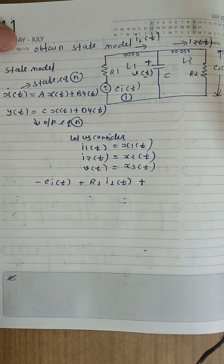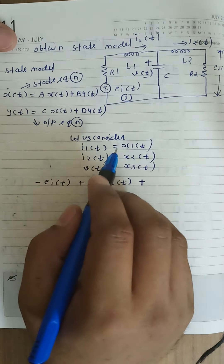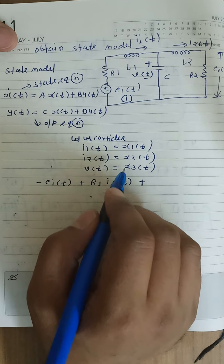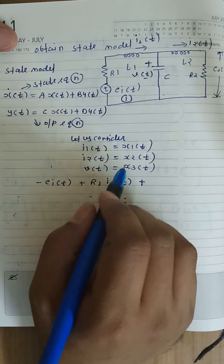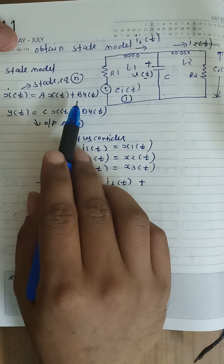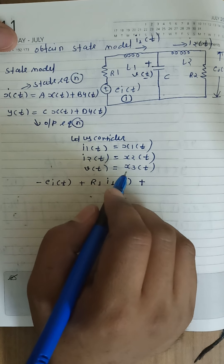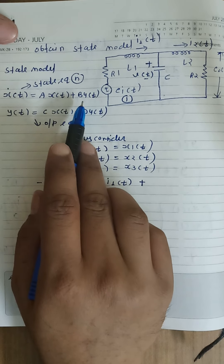Since we have three state variables, we have three state equations. The first is for x1-dot in terms of x1, x2, x3 and u(t). The second is for x2-dot in terms of x1, x2, x3 and u(t). Similarly, the third state equation is for x3-dot in terms of x1, x2, x3 and u(t).